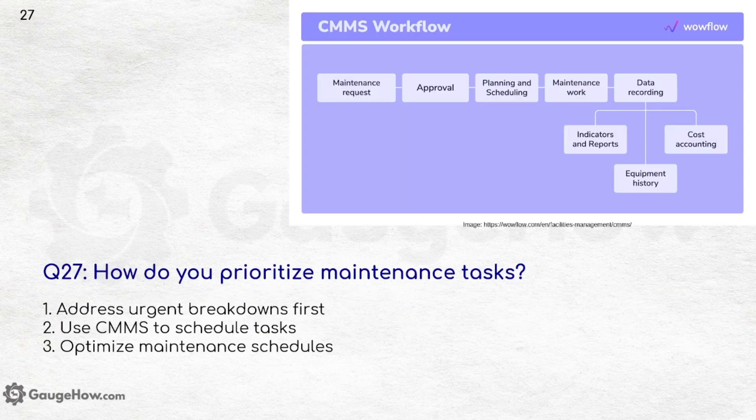How do you prioritize maintenance tasks? Address urgent breakdowns first. Use CMMS to schedule tasks and optimize maintenance schedules. The CMMS workflow includes: maintenance request, then approval, planning and scheduling, then maintenance work and data recording.